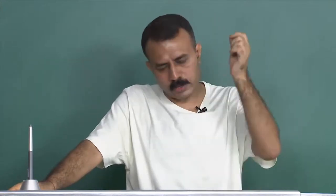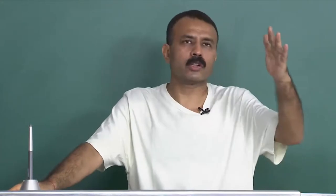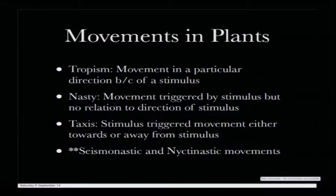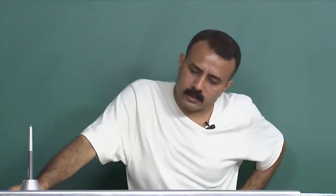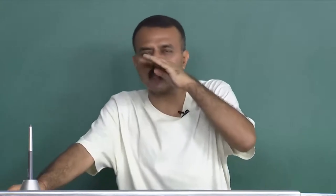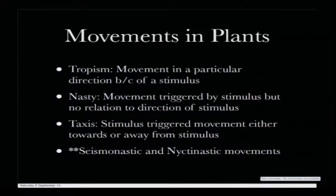If there is a stimulus, in nasty the plant will respond to it regardless of direction, whereas in tropism the directionality component matters — depending on the position of the sun the plant orients itself to derive as much solar energy as possible. The third type is taxes — stimulus-triggered movement either towards or away from the stimulus. When comparing tropism and taxes: tropism moves towards the stimulus, but taxes can also move away from it — for example, if there is an obnoxious stimulus the plant will move away. The last type, which we are going to deal with today, is seismonastic and nectanastic movements.